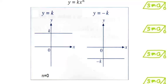This is the graph of y equals k where n is equal to 0 and k is a constant. Note that both graphs show a horizontal line.